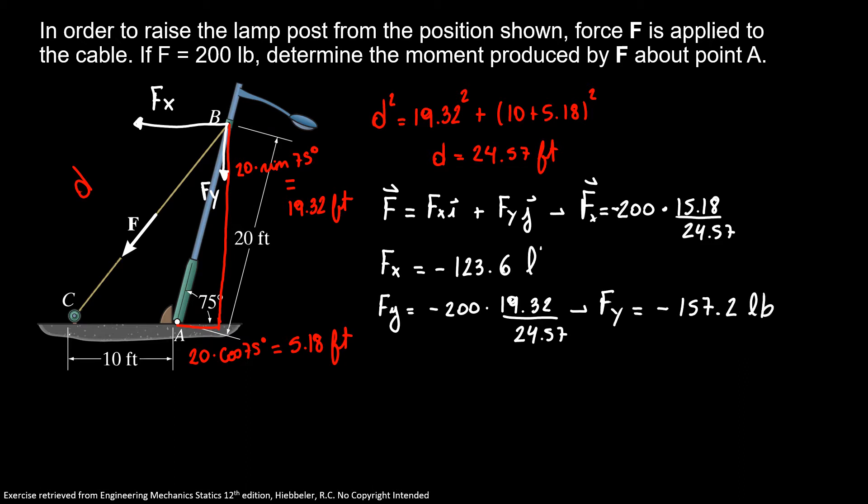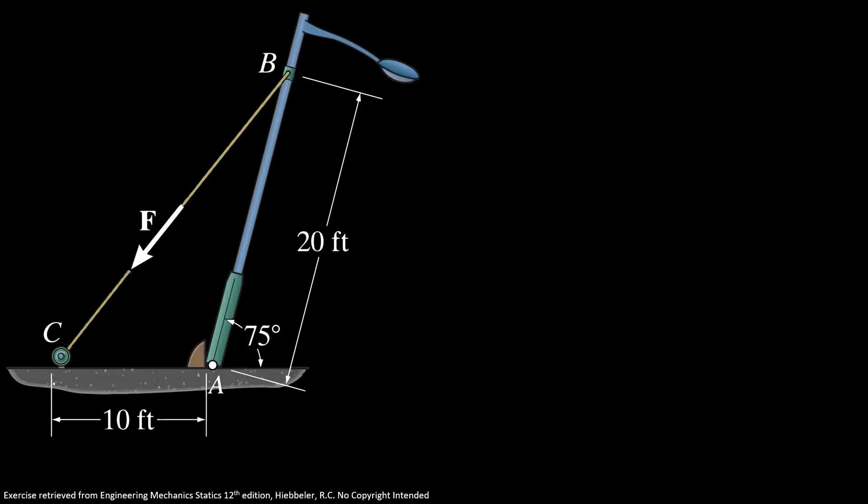Now, we know here that we have Fx, and here that we have our Fy. Here is my distance to do my moment of Fx, and here is my distance to do my moment of Fy. Here, we can see that my force Fx, doing our scalar approach, goes counterclockwise, that is plus, and my force Fy goes clockwise, that is negative.